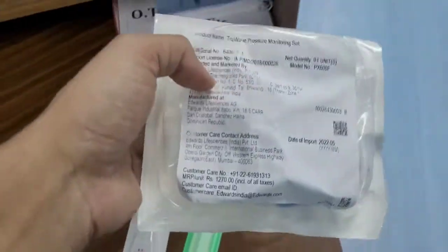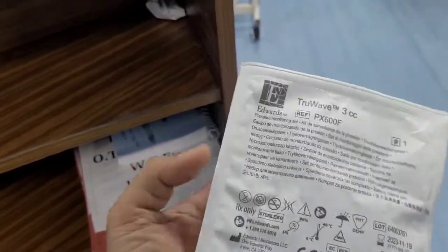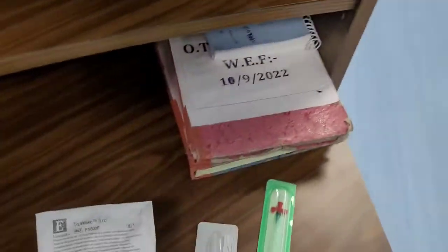This is the transducer dome, the most important part of arterial monitoring. It is connected with the monitor and gives you arterial monitoring. Now I am going to show you how to monitor invasive blood pressure with the monitor.